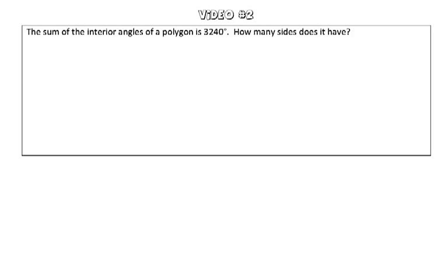In this question, we are told the sum of the interior angles of a polygon is 3,240 degrees, and we're asked, how many sides does it have?